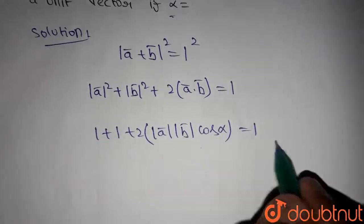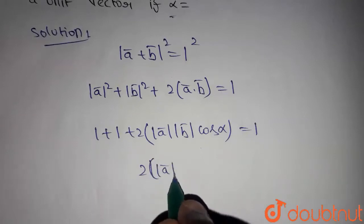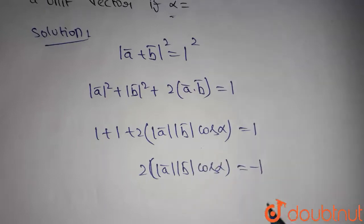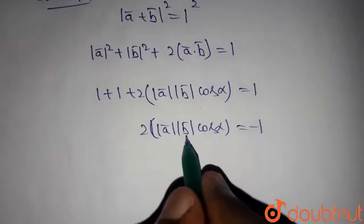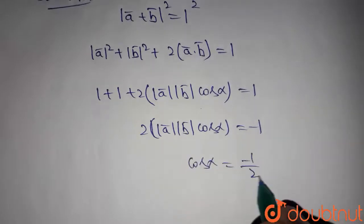It will become plus two. If we take plus two to the other side, it will become 2 times magnitude of a times magnitude of b times cos alpha equals minus one. We know that magnitude of a equals one and b equals one, so we get cos alpha equals minus one by two.